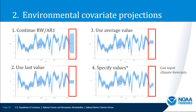One nice thing about treating environmental data as a random effect is how it's handled in projections. Options include continuing the random walk or AR1 process, using an average value, using the last value, or specifying the value in the projection period — where you could input climate forecasts or run simulations testing different environmental conditions in the future.